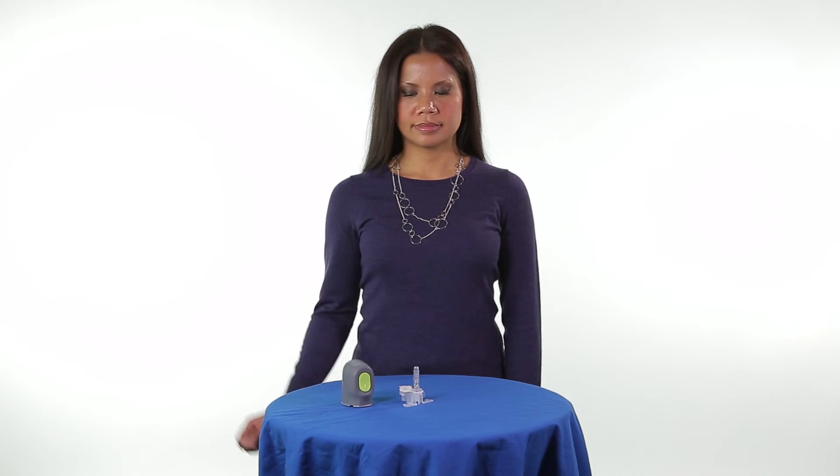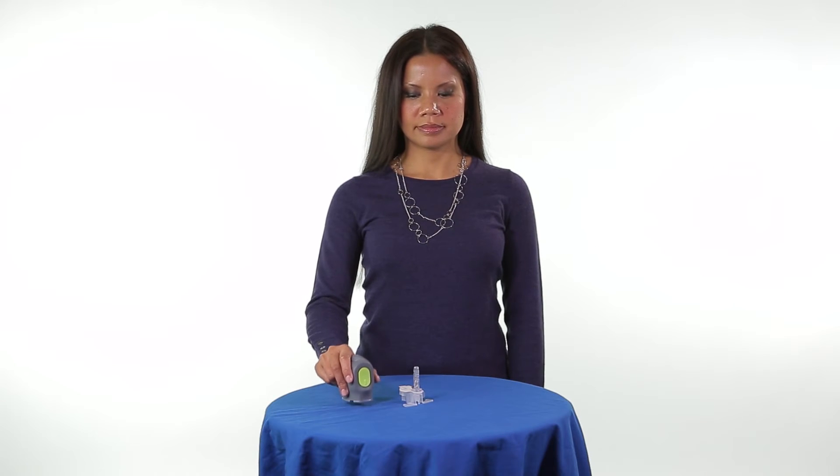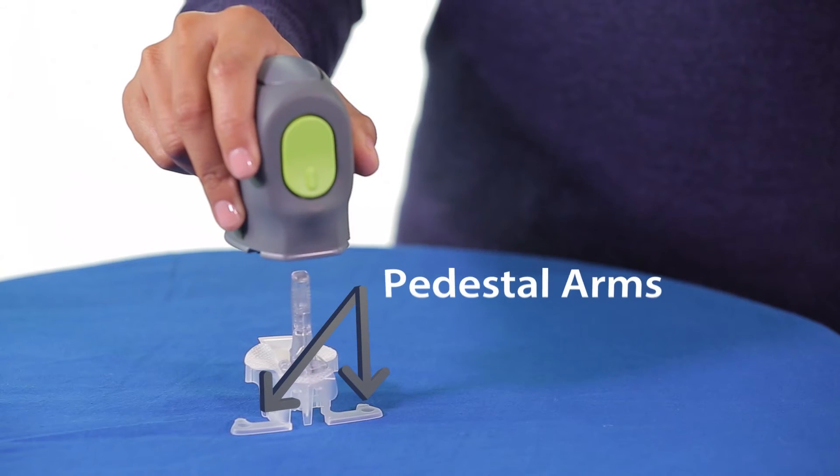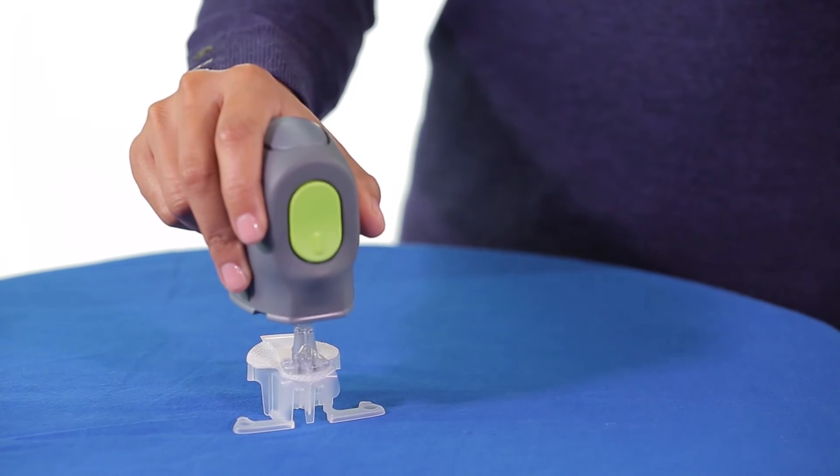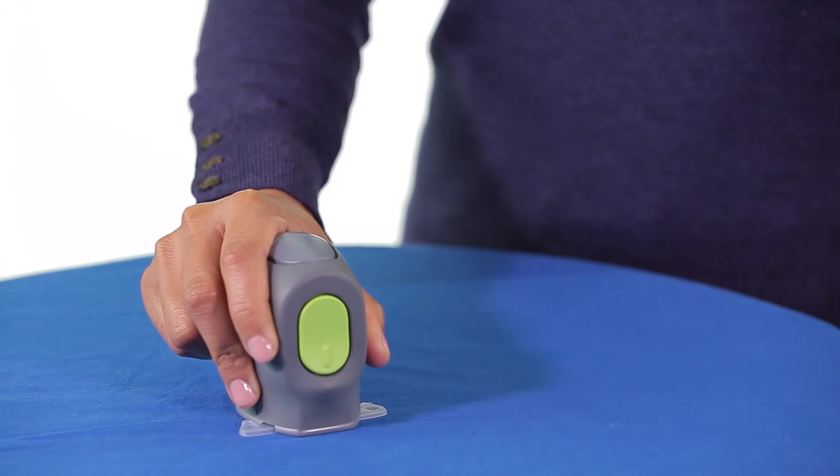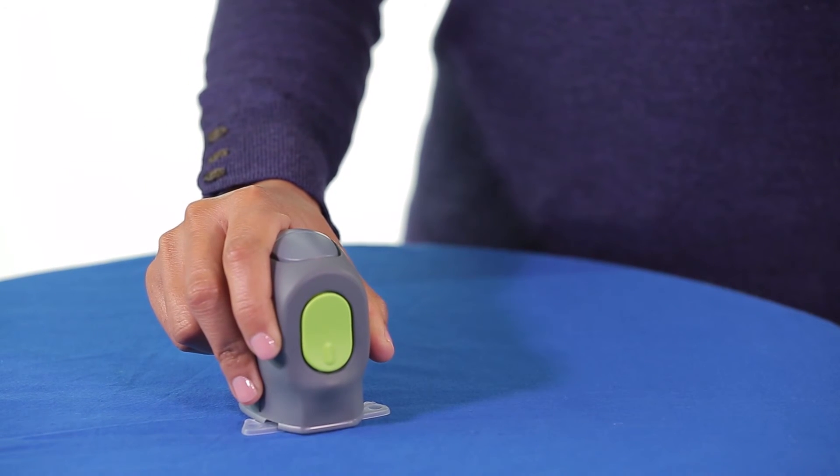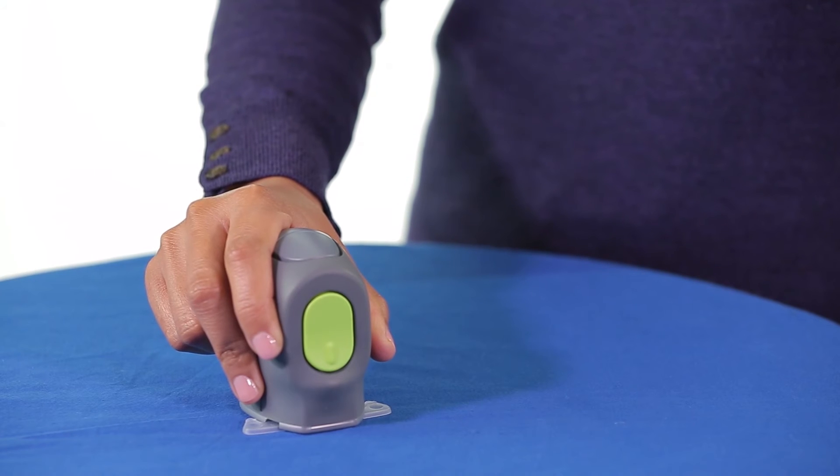You must hold the SIRTA so that the green button is facing the front and lined up with the arms of the pedestal. Then in one motion, gently lower the N-Lite SIRTA straight down onto the sensor until the base of the SIRTA sits flat on the table. Do not push the SIRTA down too hard, as this might cause the sensor to load improperly.